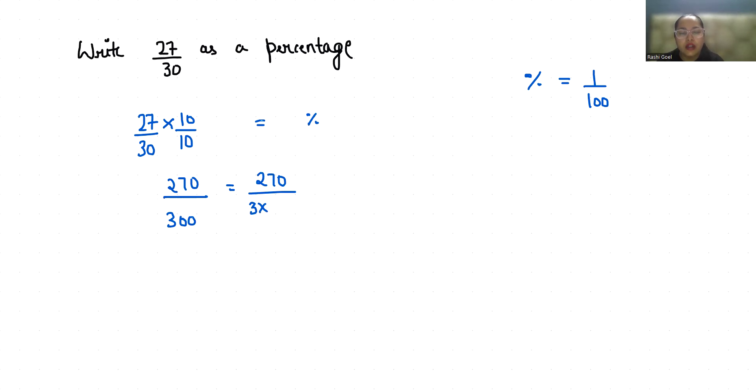Now if we divide 270 with 3 it gives us 90 by 100 and this 90 by 100 I can write it as 90 times 1 by 100. Now in place of 1 by 100 we can write percent. So it becomes 90 percent. So 27 by 30 is equals to 90 percent.